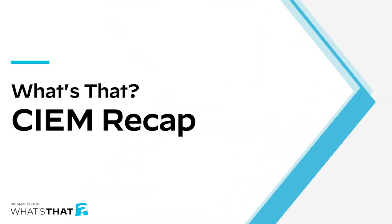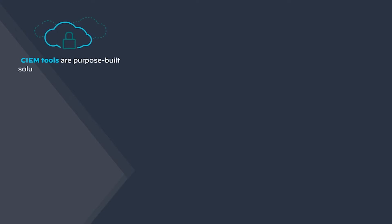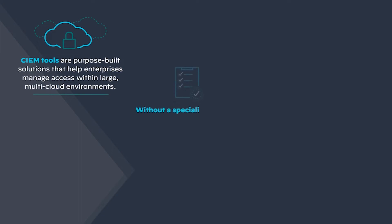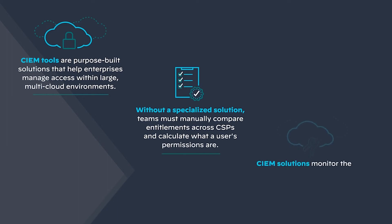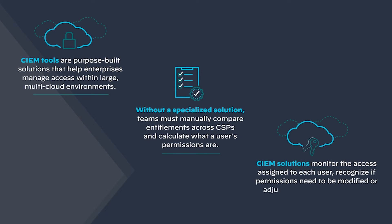So let's recap what we've learned in this episode of What's That? CIEM tools are purpose-built solutions that help enterprises manage access within large multi-cloud environments. Without specialized solutions, teams must compare entitlements across CSPs and calculate what a user's permissions are. CIEM solutions monitor the access assigned to each user, recognize when permissions need to be modified or adjusted, and help you in making those adjustments.